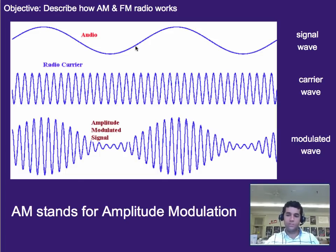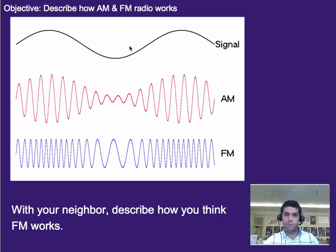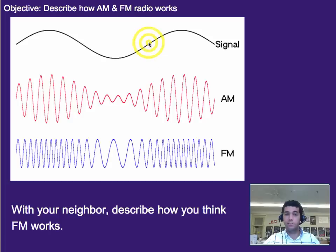Given that that's amplitude modulation, let's look at another example. Here we have a signal — a simple sine wave — and we can see that AM, or amplitude modulation, is where the amplitude of the wave changes to mimic the signal. What do you think FM does? What do you think it stands for and how do you think it works? Pause and chat with a neighbor or at least think to yourself.